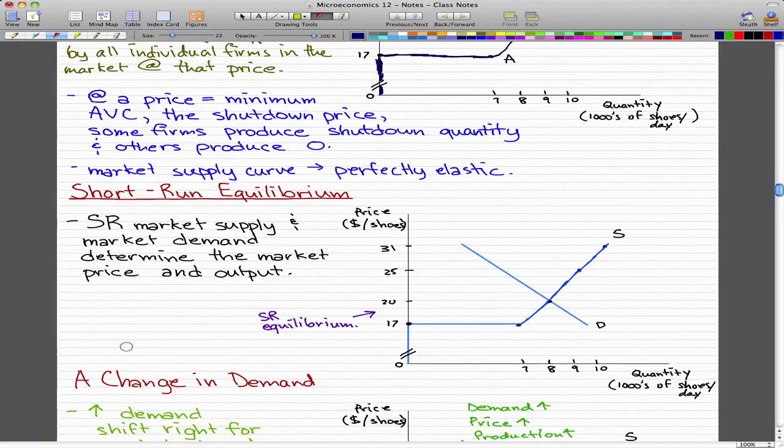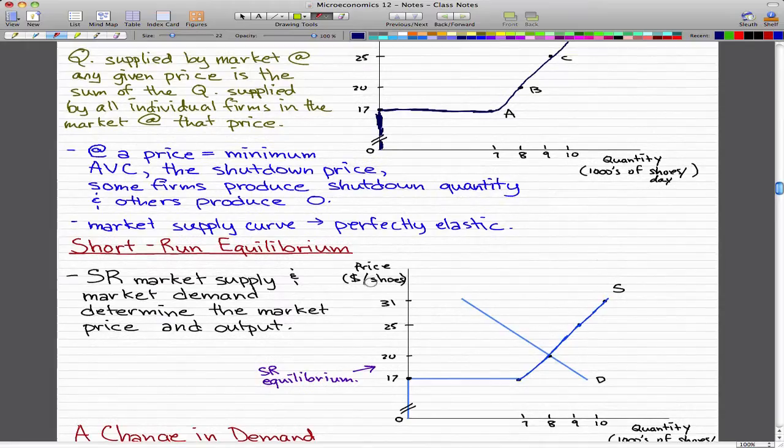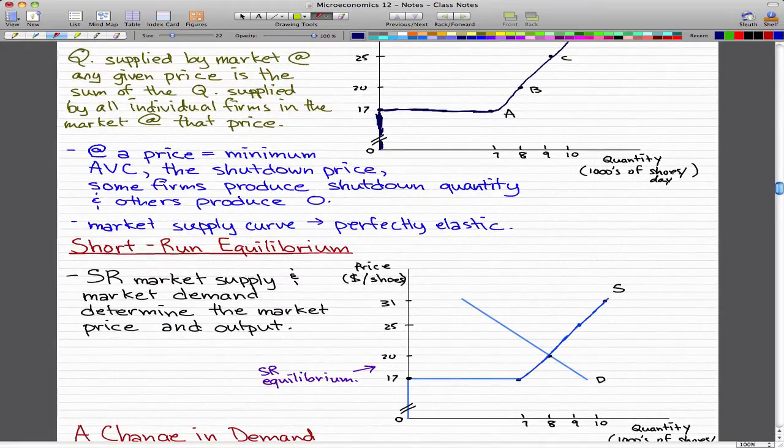So that's that. I also forgot to note that the market supply curve is perfectly elastic. But on this topic of short-run equilibrium, the short-run market supply and the market demand will determine the market price and output.